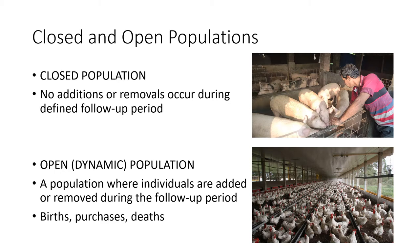In your closed population, during the entirety of your observation or study, there is no addition or removal occurring during the defined follow-up. For example, a backyard farm with around 10 pigs over a five-month grow-out phase where no pigs were added and no pigs in the pens died, got sick, or were sold. Within that observation period, no additions or removals occurred — that is the closed population.